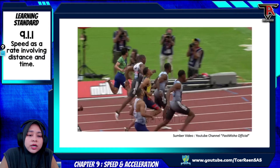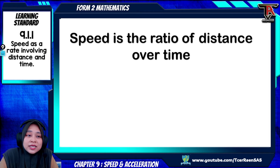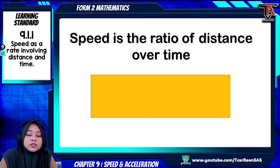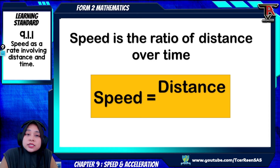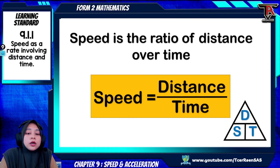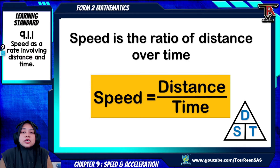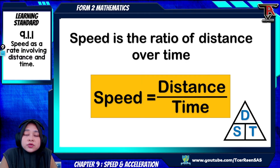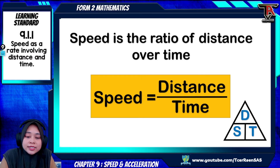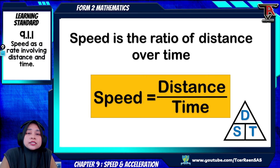What is actually speed? Speed is the ratio of distance over time. This is the formula: speed equals distance over time. This is the triangle DST — I call it DST — and I will explain further what is the use of this triangle later. Before that, I will show you some examples to make sure you understand what speed is and how to find speed for some situations.